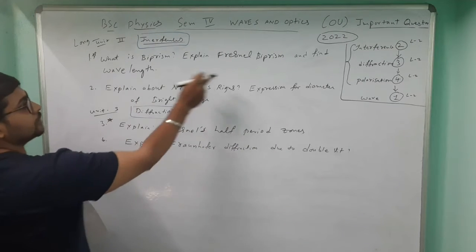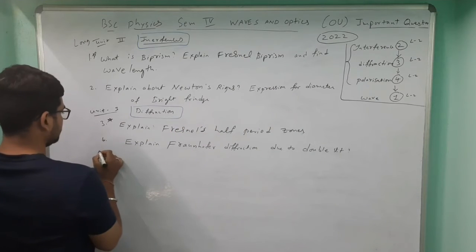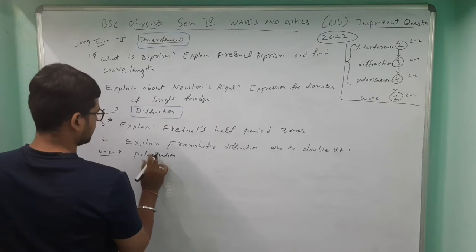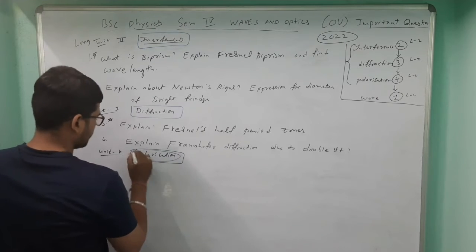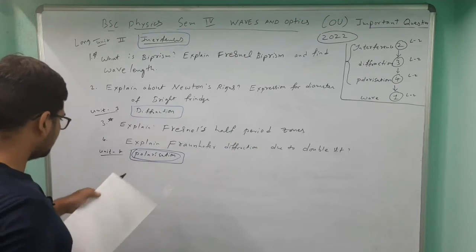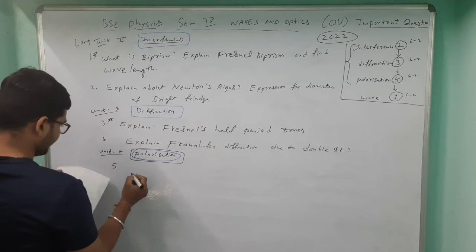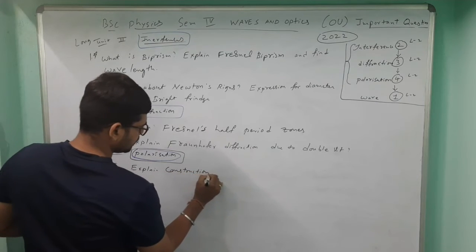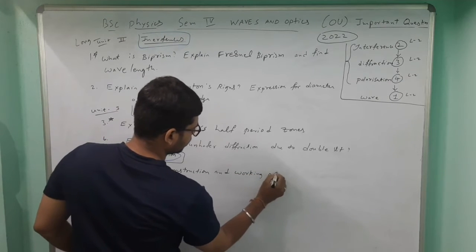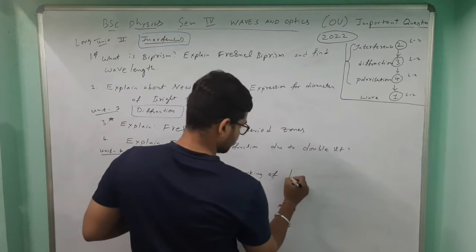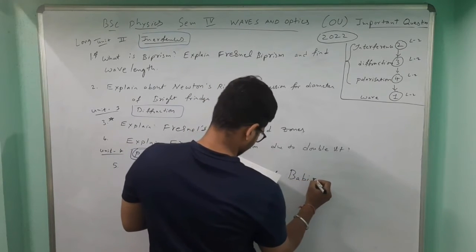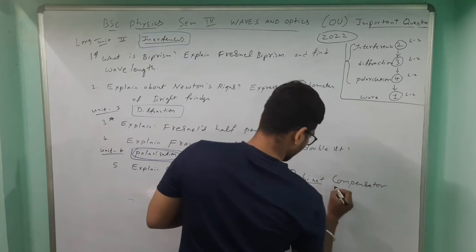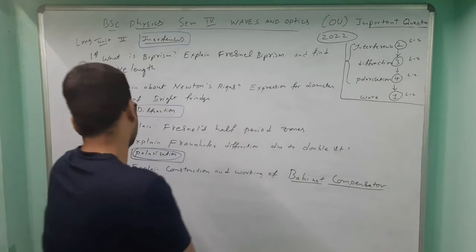Two questions for diffraction are over. Now for unit four — Polarization. The fifth question: explain the construction and working of the Babinet Compensator. This is very, very important — I'm giving it three stars. There are many chances that this will come in the exam.